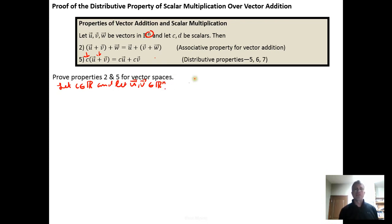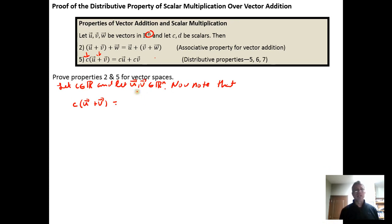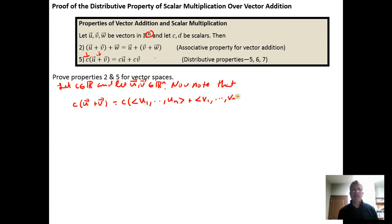And then we do a transition phrase — something like 'now note that' — and then we establish the left-hand side. The scalar times the sum of the two vectors equals... and because these are vectors in ℝⁿ, we know they each have n components, so we can rewrite this as c times the vector u written in component form as (u₁, ..., uₙ) plus the vector v written in component form as (v₁, ..., vₙ). And this is just the sum of two vectors, which we know how to do.